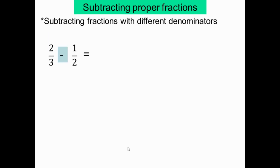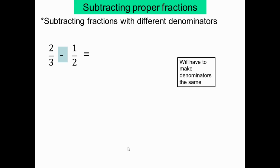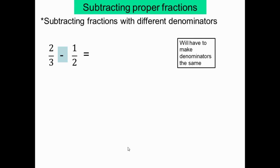Toye na: on va soustraire des fractions propres mais avec des dénominateurs différents. Par exemple: 2 sur 3 moins 1 sur 2. Ces fractions sont propres car les numérateurs sont inférieurs aux dénominateurs, mais les dénominateurs sont différents. Donc on doit trouver le dénominateur commun. Men don, you have to make the denominators the same. Il faut trouver le LCM — list common multiple.